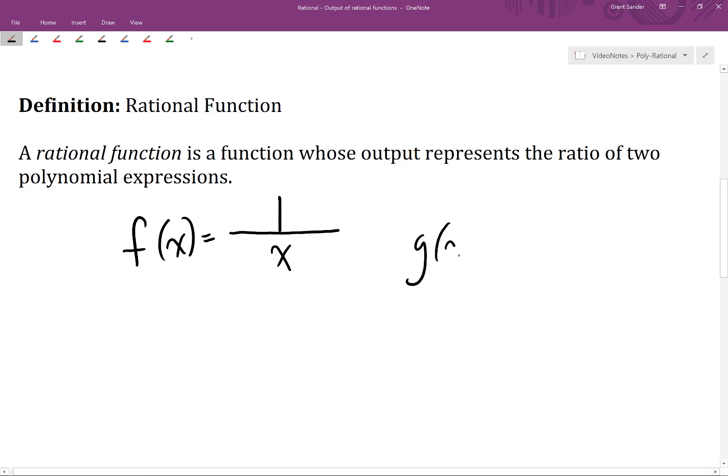Some other examples might be g of x equals x plus 5 divided by x squared minus 2x plus 7, and so on. So all we need is the ratio of two polynomial expressions.